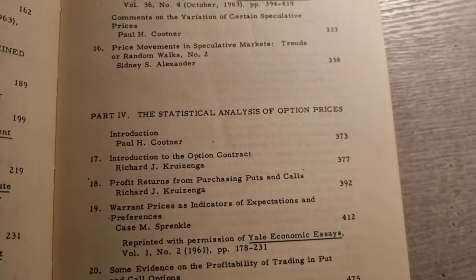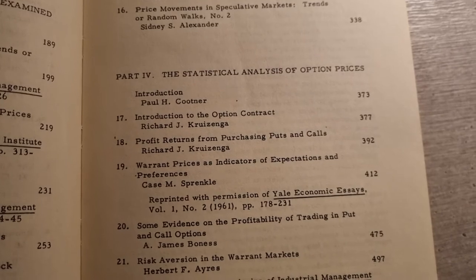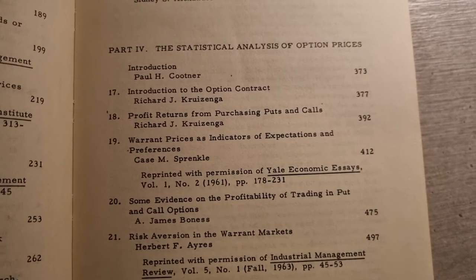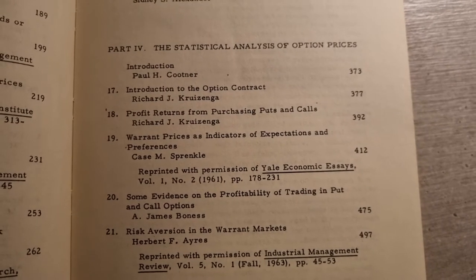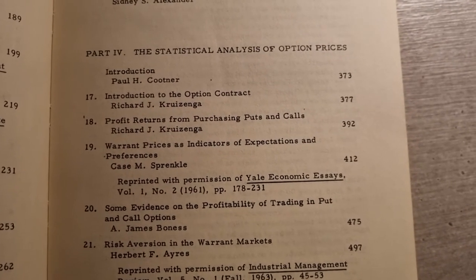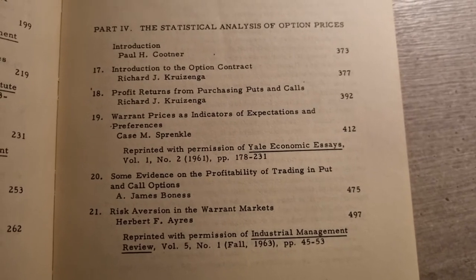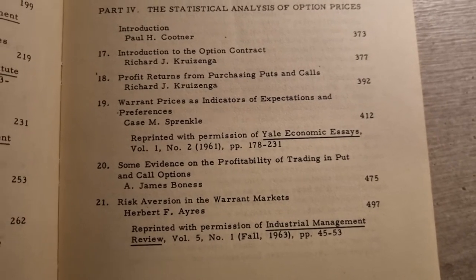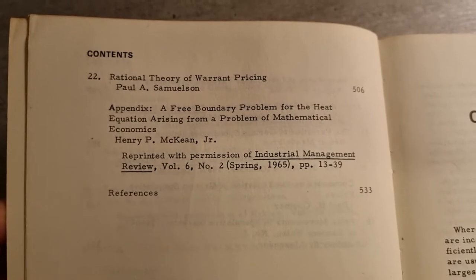That section is one of the classical studies of random walk theory. If you're familiar with the Black-Scholes formula, it's basically the analysis of put and call options using random walk theory, so this is kind of the basis for that. You have Introduction to Option Contracts, Profit Returns from Purchasing Puts and Calls, Warrant Prices as Indicators of Expectations and Preferences, Some Evidence of Profitability of Trading in Put and Call Options, and Risk Aversion in Warrant Markets.